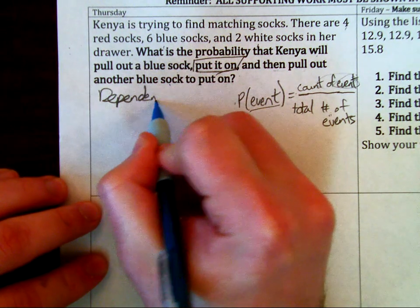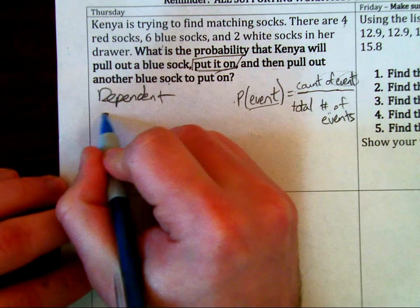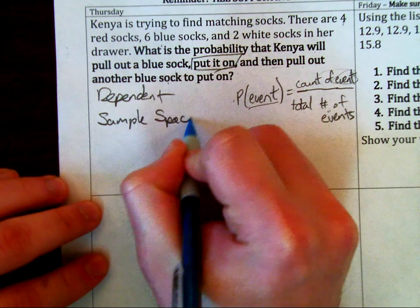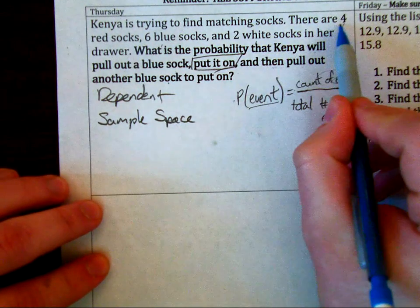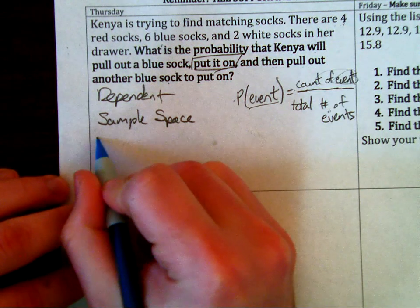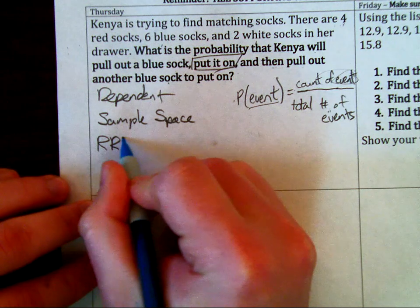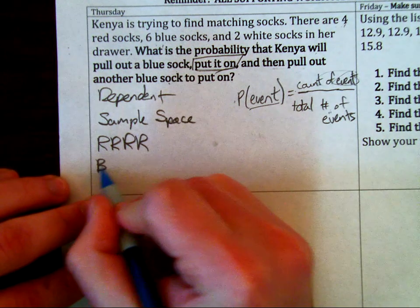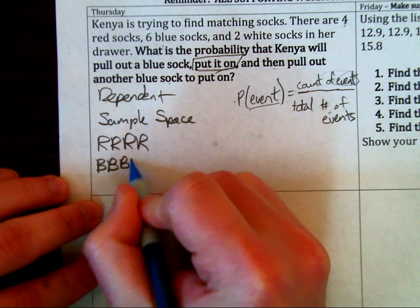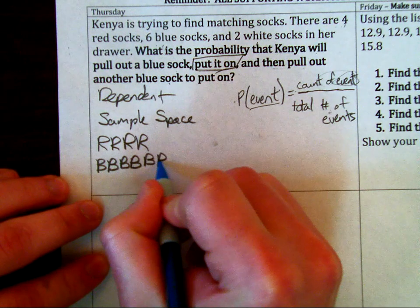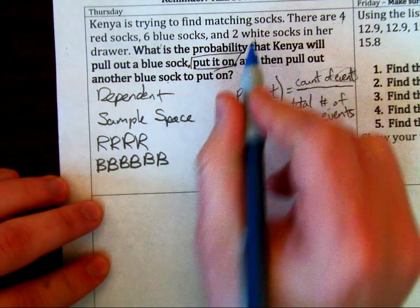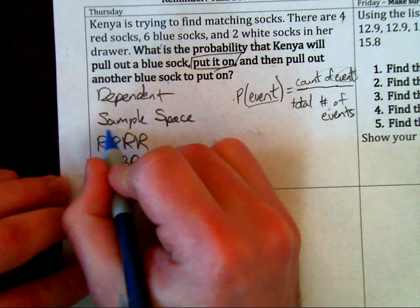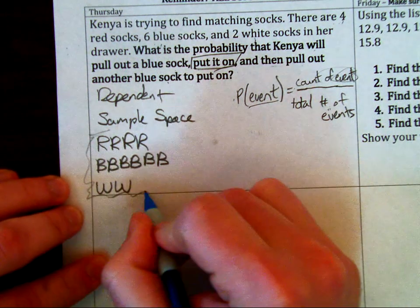Dependent. And I can also draw out my sample space right here. So where it has that 4 red, I can do 1, 2, 3, 4. I can do 6 blue: 1, 2, 3, 4, 5, 6. Lastly, I can do 2 white socks: 1, 2.